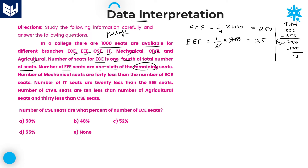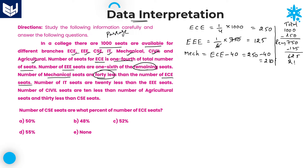After completing ECE and EEE, the number of seats available is 625. Next, number of mechanical seats are 40 less than the number of ECE seats, that is equal to 250 minus 40, which is equal to 210. After accounting for mechanical, still 415 seats are left over.